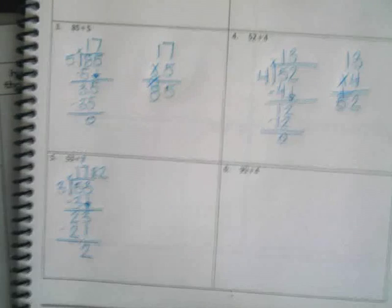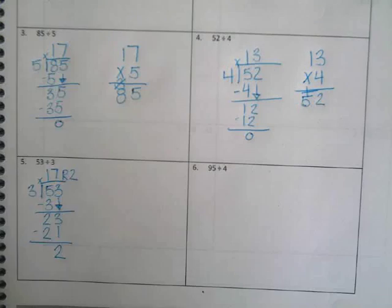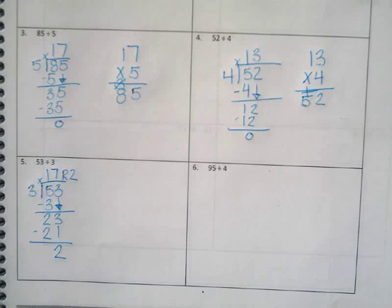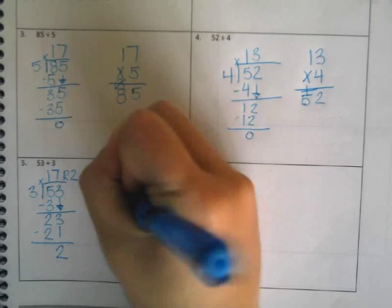So, let's scooch on down here. How do I check these? What do I always do? I always start with one thing. Garrett, what do I start with? 17 times 3. Yep, I start with my quotient, which is 17.